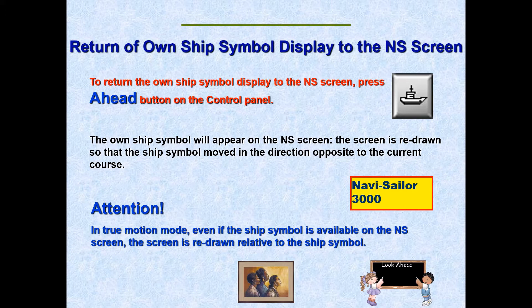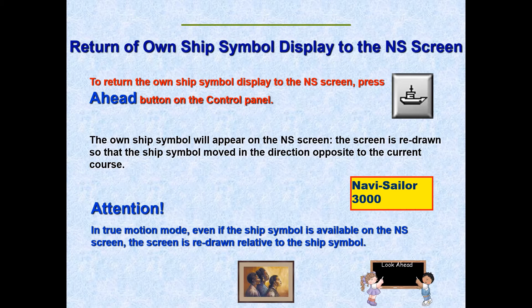Now I will go into the ECDIS system and show you how the look ahead feature looks like and how the anti-grounding tool is set up to warn you for any dangers to navigation. I will also show you what the past track feature looks like, how you can select or deselect it, and I will show you the warnings and alarm signals that light up during the ship's passage. Remember that the electronic chart system may operate in true motion mode such that the own ship will move across the chart display, and you as the officer on watch will probably offset the own ship from the center of the display in order to achieve the maximum benefit from the look ahead function.